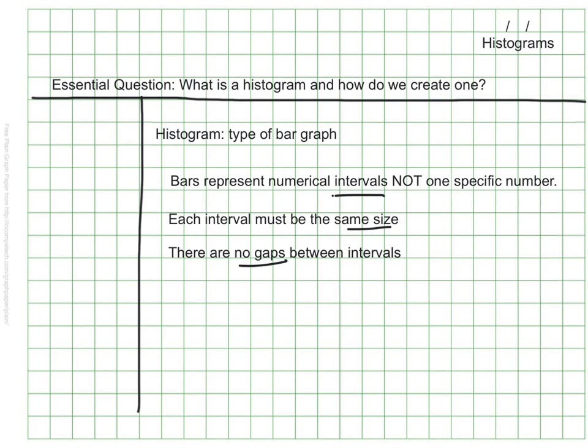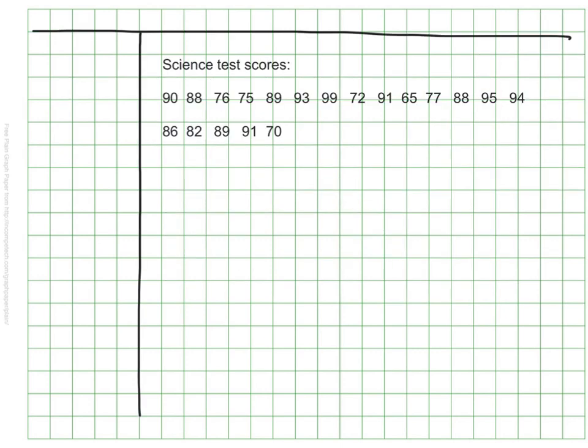Let's take a look at some data, and we'll see how this can be turned into a histogram. Here's some data for some science test scores. I know it looks like a lot, but go ahead and write it down so you have it as well. Everything that I'm writing we should have in our journals.